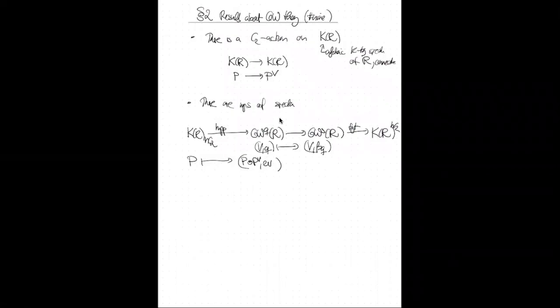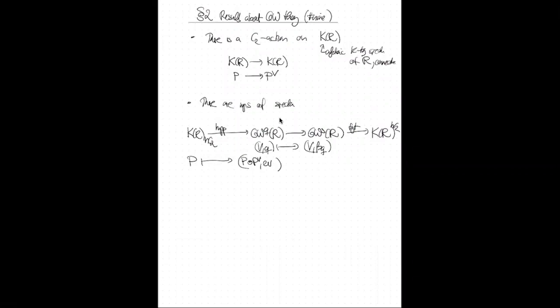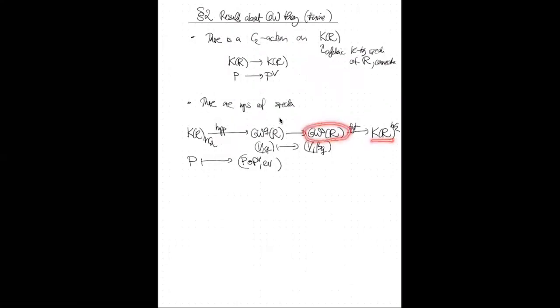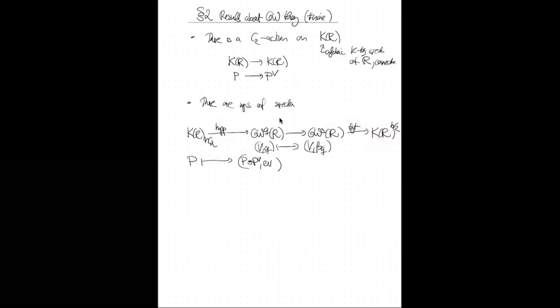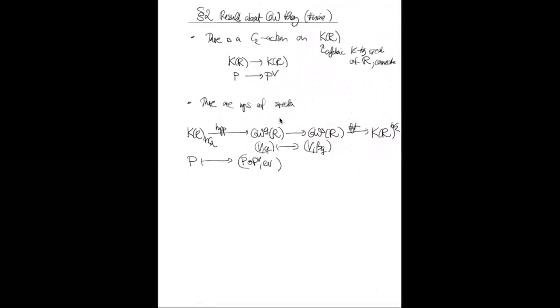There is also a forgetful map GW^s(R) → K(R) that takes a form and forgets the bilinear structure, keeping only the underlying projective module. Since a symmetric form includes an isomorphism from P to its dual, this map factors through the homotopy fixed points K(R)^{hC₂}. It's close to a tautological map: remembering a projective module plus an isomorphism to its dual almost recovers the whole symmetric bilinear form.